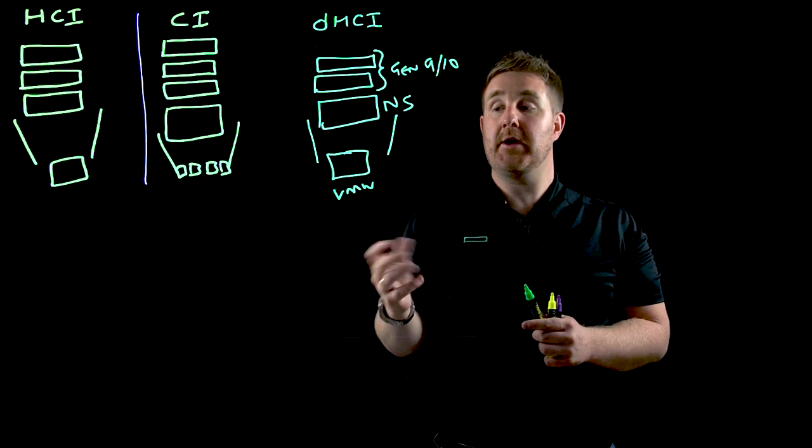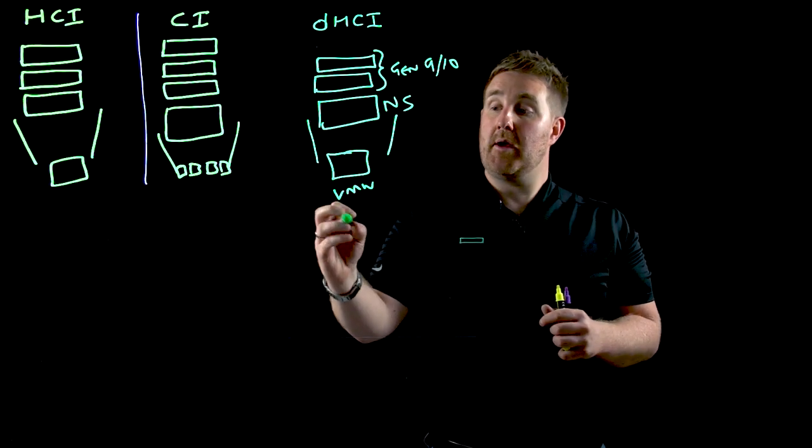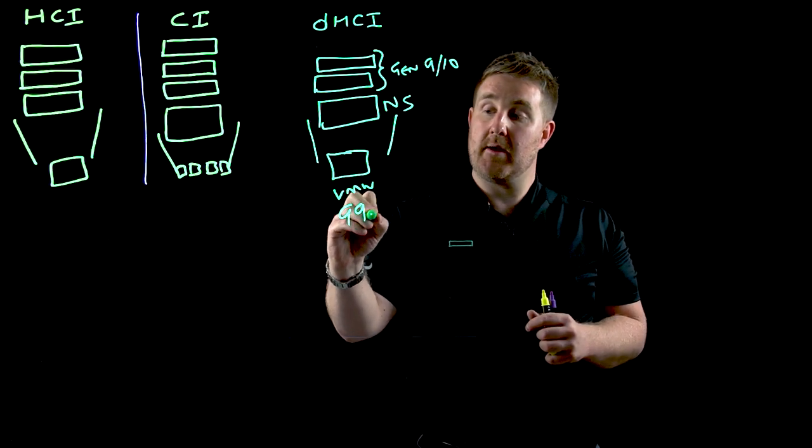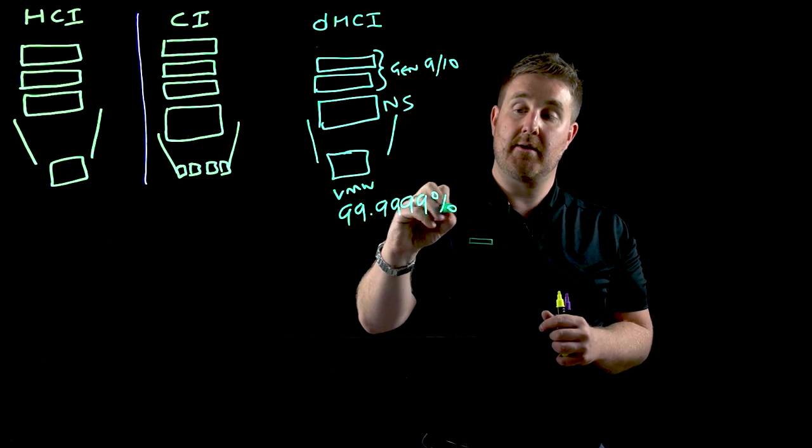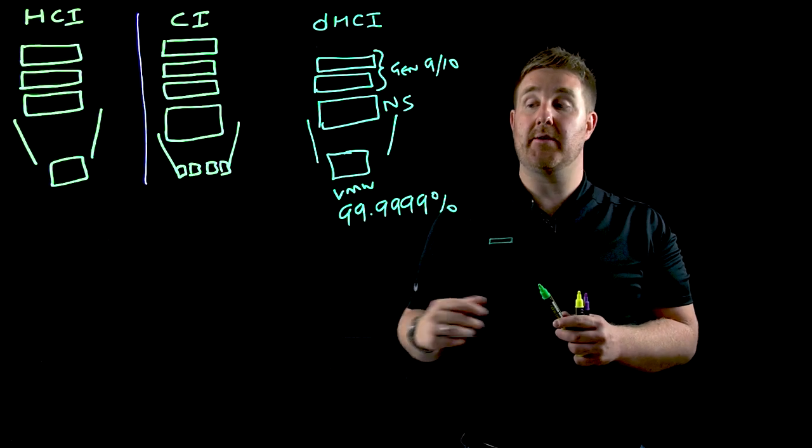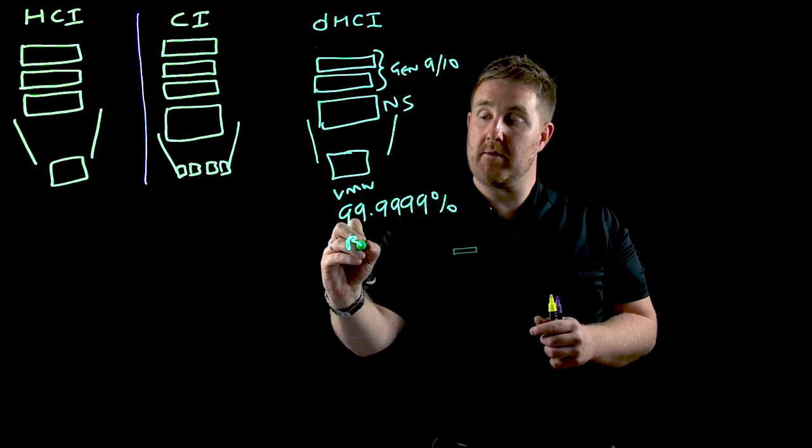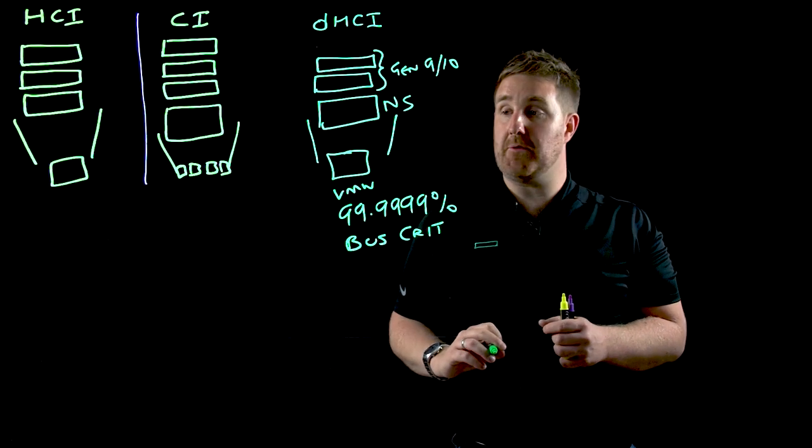Now the benefit of this is that because it's Nimble it can now run essentially 99.9999% availability and that's what that platform runs out in the field today. It allows you to run business critical applications on a DHCI platform.